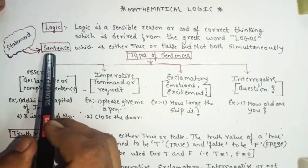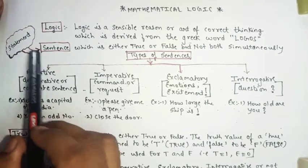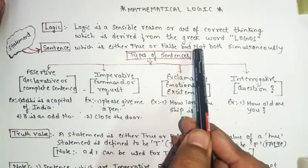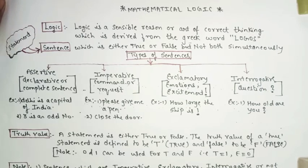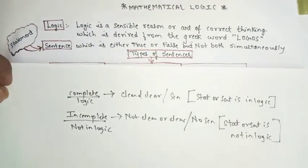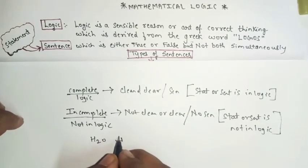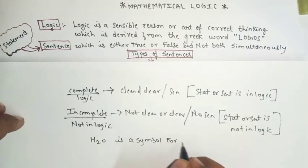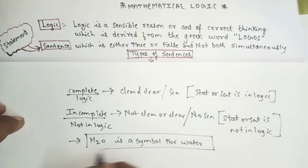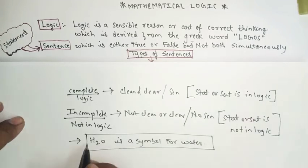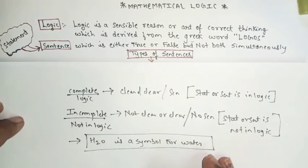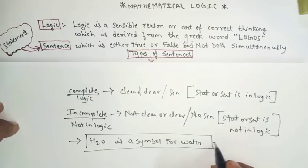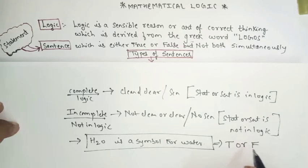What do we mean by a statement? A statement is a sentence which is either true or false, but not both simultaneously. For example, if I say 'H2O is a symbol for water' — when you read that sentence, it is clean, clear, and complete, and there is a sense in it. Such a sentence will either be true or it will be false; it cannot be both true and false.